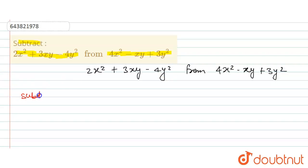We will subtract from the expression 4x² - xy + 3y². What we will subtract is this complete expression, so this can be written in the bracket with a minus sign: 2x² + 3xy - 4y².